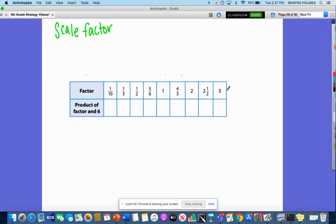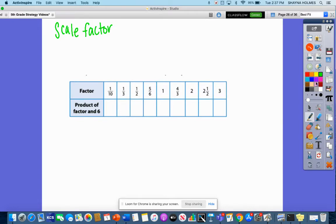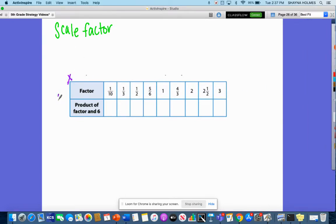So what we're going to do is after we do this, we're going to make a couple of inferences about what we notice as far as patterns in this chart. So I'm going to pick a different color. Just know we're going to be multiplying all of these by six.